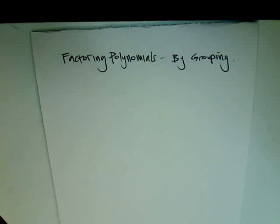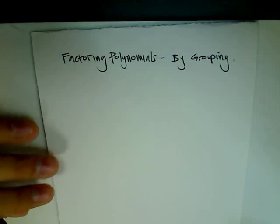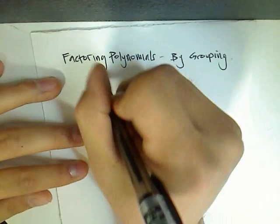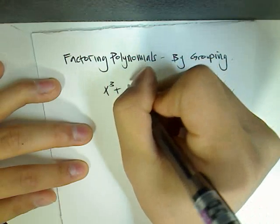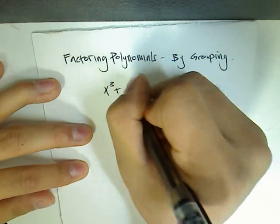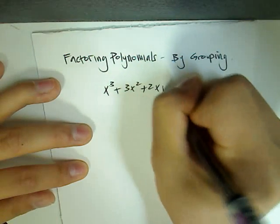So now I'm going to show you how to factor polynomials by grouping. When do you factor polynomials by grouping? Well, you do it when you're given a polynomial. In this example, I'd use x cubed plus 3x squared plus 2x plus 6.